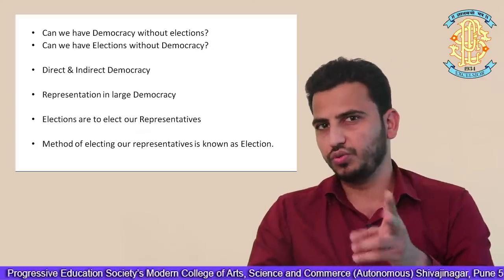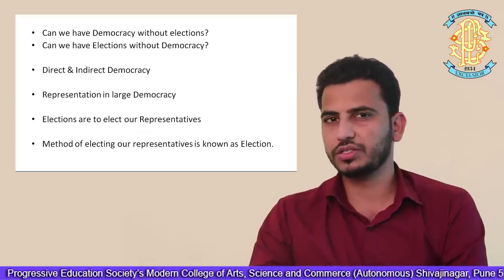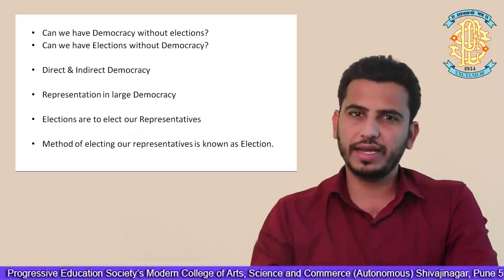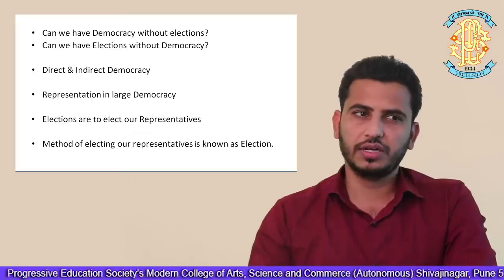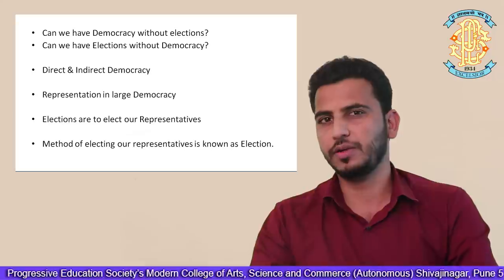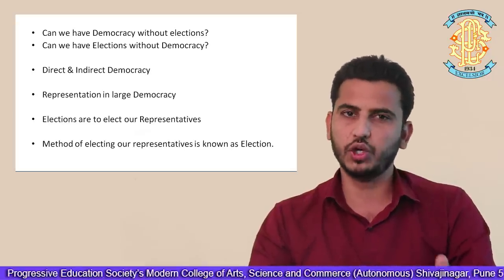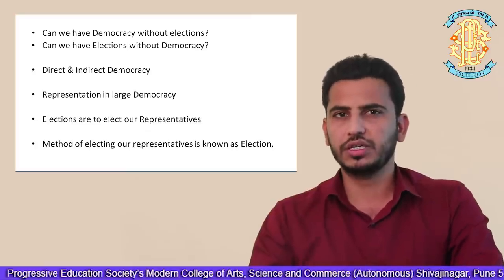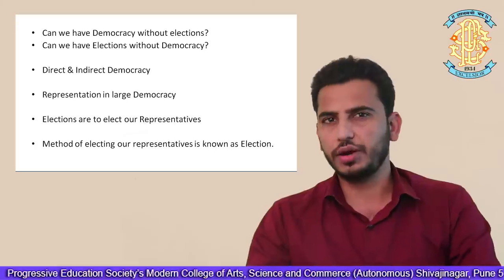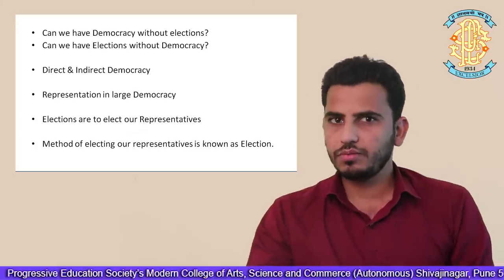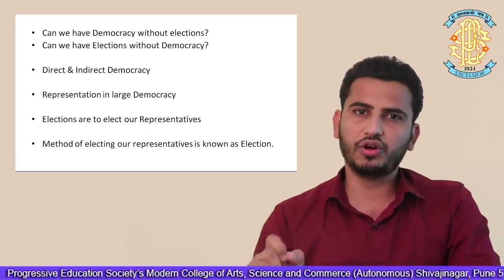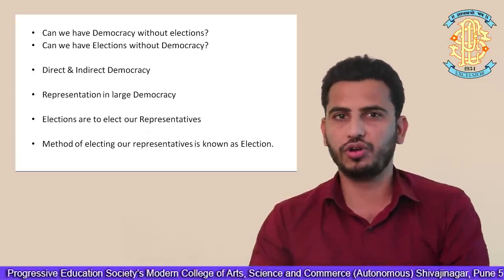Two ways: without democracy you cannot have election, and without elections you cannot have democracy. Even if you are having elections without democracy — for example, few countries which are not democratic in nature still conduct elections just for showing that they are democratic, whereas they are actually not. So we will differentiate between elections of democratic regimes and non-democratic regimes.